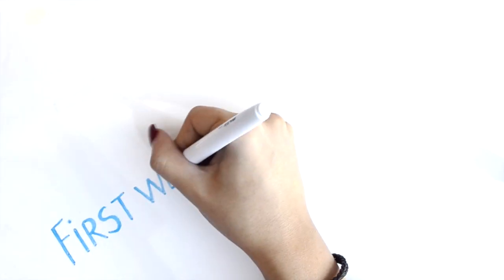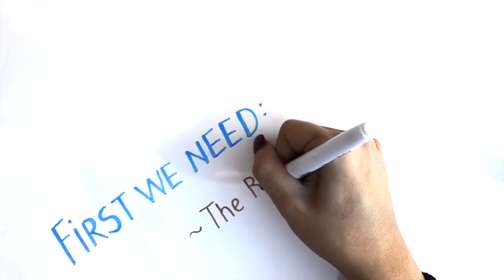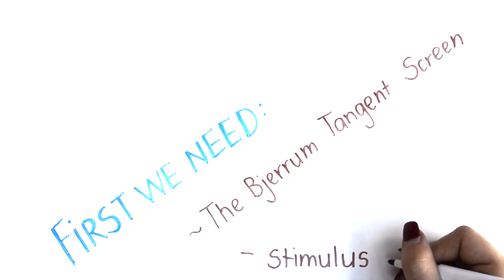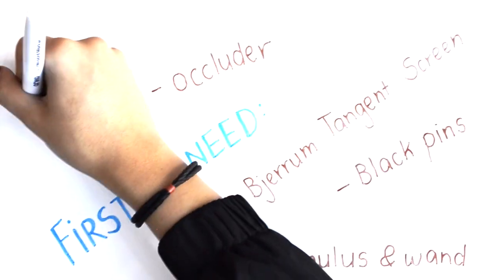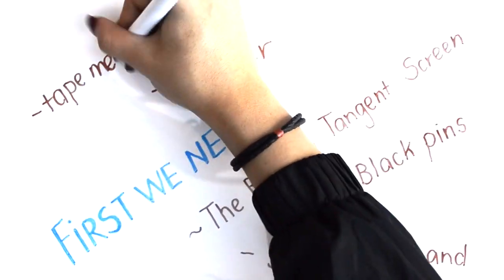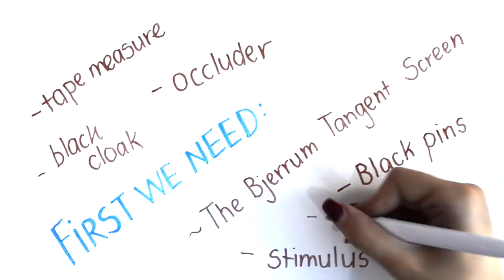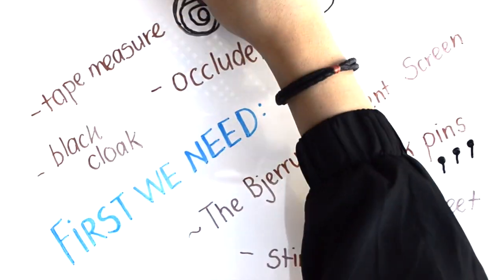The equipment required to perform the Bjerrum consists of the Bjerrum tangent screen, stimulus and wand, black pins, an occluder, a tape measure, a black cloak for the examiner, and the recording sheet.